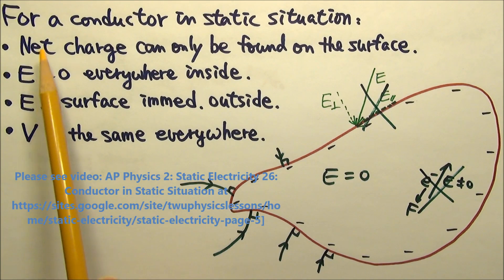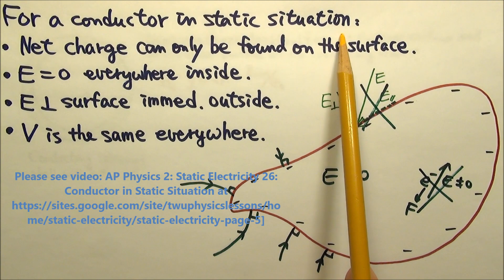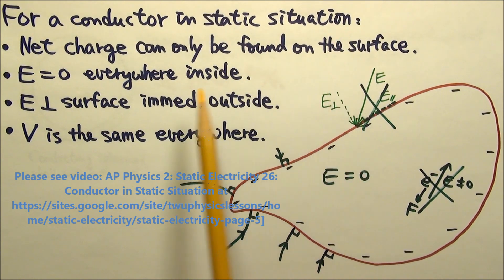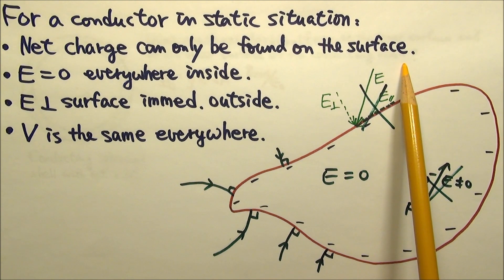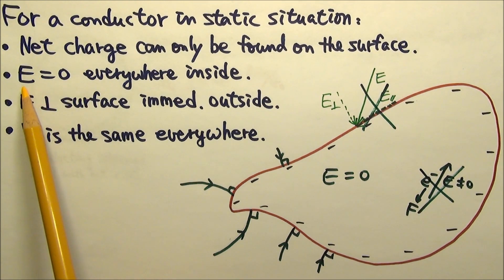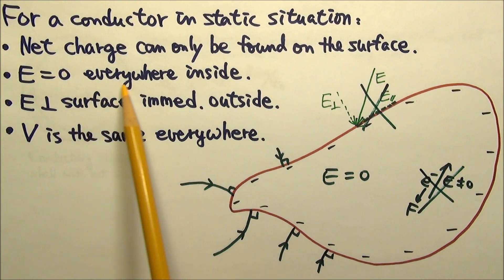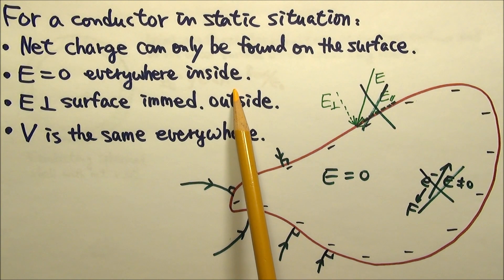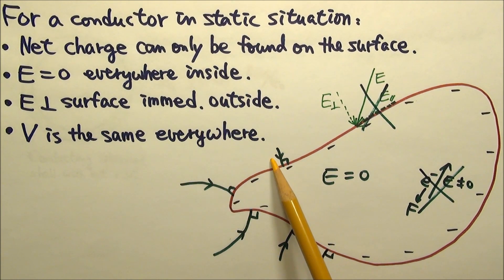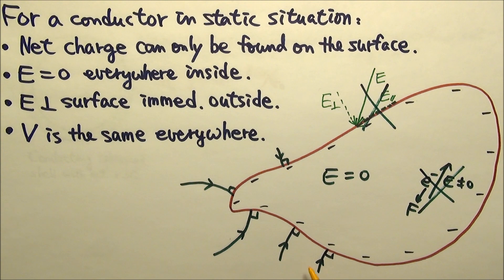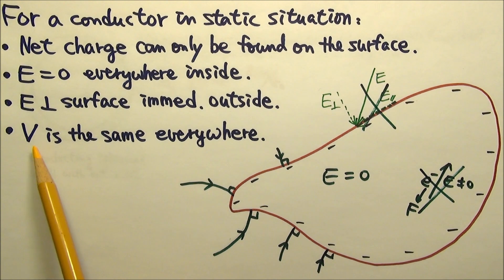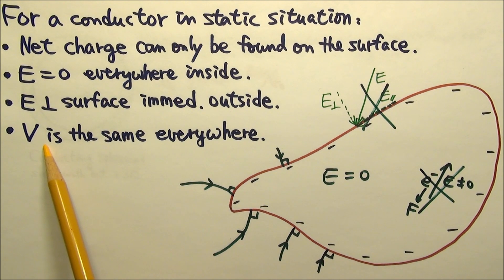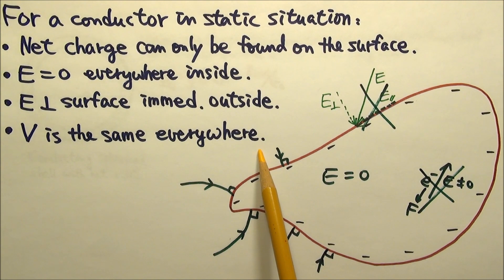First, let's review a little bit about the conductor in a static situation. Any net charge can only be found on the surface of the conductor, and the electric field is zero everywhere inside the conductor. Any electric field outside the conductor must be perpendicular to the surface immediately outside the surface. And the electric potential is the same everywhere throughout the conductor.